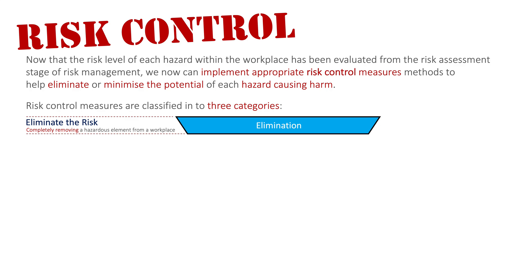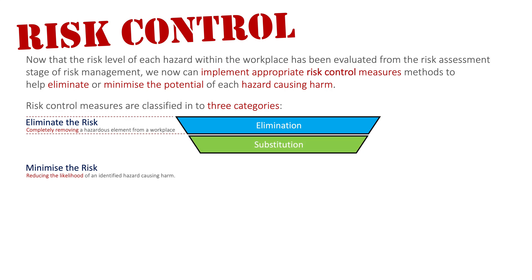We then move into the next level of minimising the risk, where we reduce the likelihood of these identified hazards causing harm. There are four sub-stages here. The first is substitution, where we get rid of one type of tool, procedure, or piece of equipment and replace it with a similar tool, equipment, or procedure that is deemed safer. So we've substituted a similar item for the item that was a hazard, which is hopefully a bit safer.